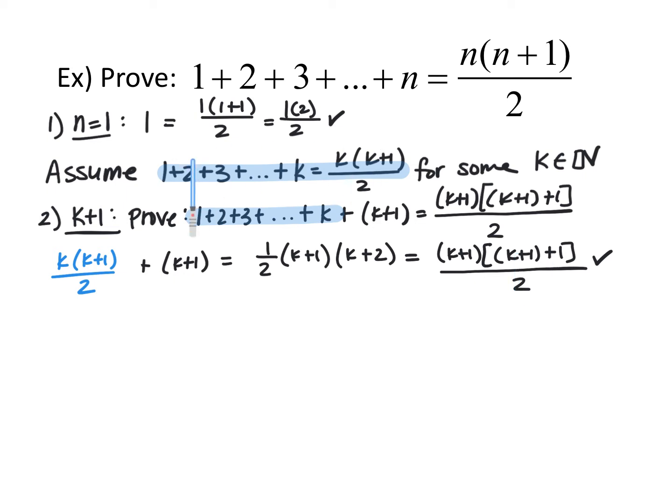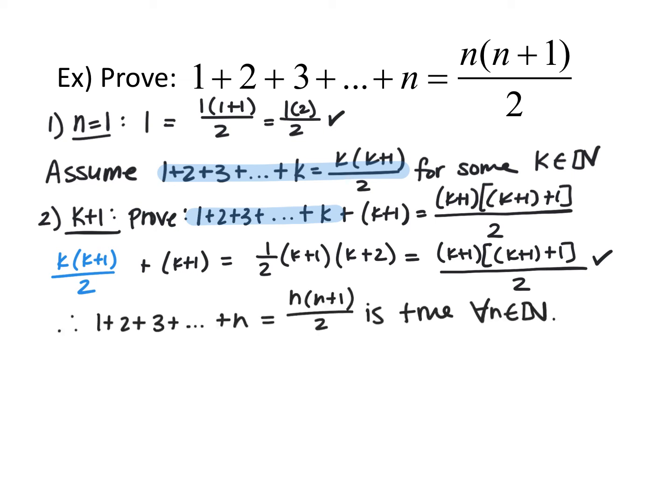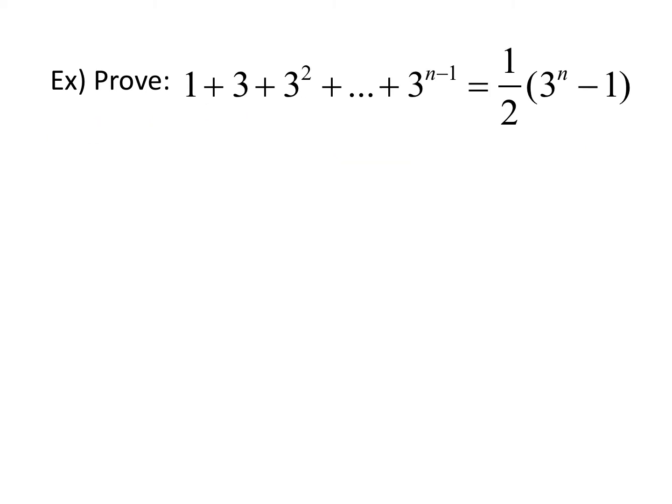Therefore, we have proved this statement true for k plus 1. The last statement answers the question: 1 plus 2 plus 3 plus ... up to n equals n times n plus 1 over 2 is true for all n in the natural numbers. Next proof: prove that 1 plus 3 plus 3 squared plus so on plus 3 to the n minus 1 equals one-half times 3 to the n minus 1.